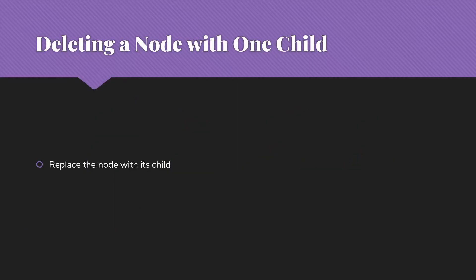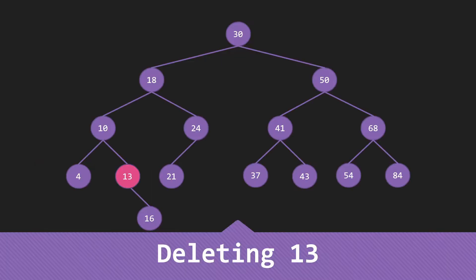If the node I want to delete has a child, I don't simply want to put a null there — I need to do something to keep the child. So what I'm going to do is replace the node with its child. In this example, we're trying to delete the 13. We find that the 10 is the parent of the 13, which is on its right, and we see that 13 has one child. So we simply replace it with the 16.